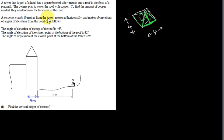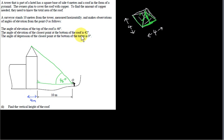A surveyor stands 10 meters from the tower, measured horizontally, and makes observations of angles of elevation from point O as follows. The angle of elevation of the top of the roof is 46 degrees, measured from the horizontal. The angle of elevation of the closest point at the bottom of the roof is 42 degrees. The angle of depression of the closest point at the bottom of the tower is 9 degrees — measured downward from the horizontal.